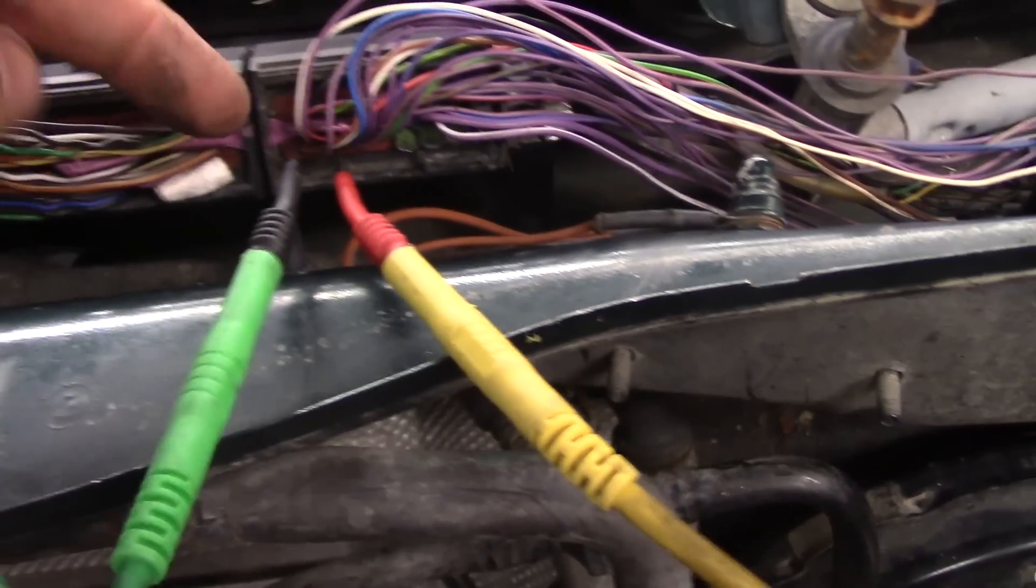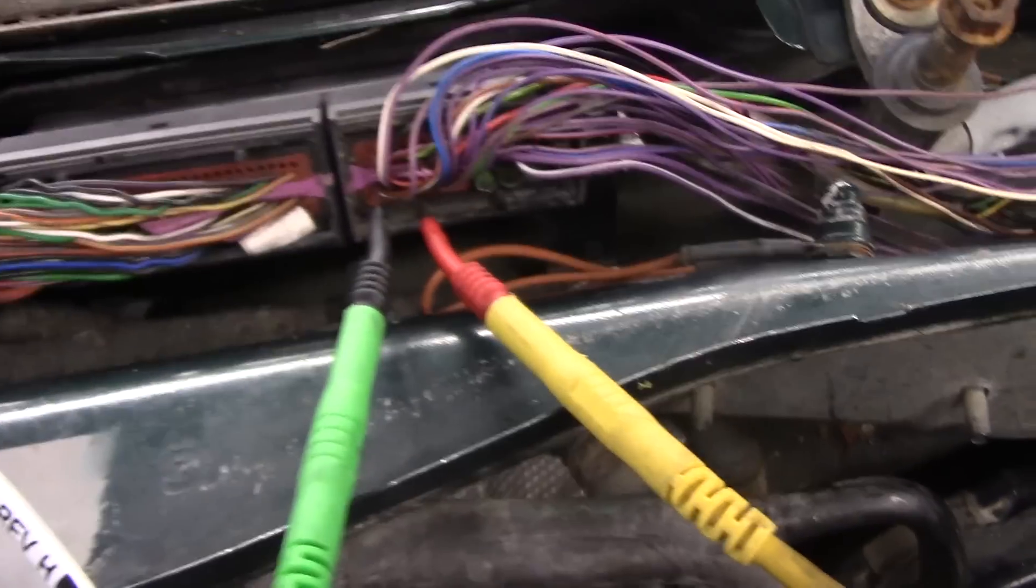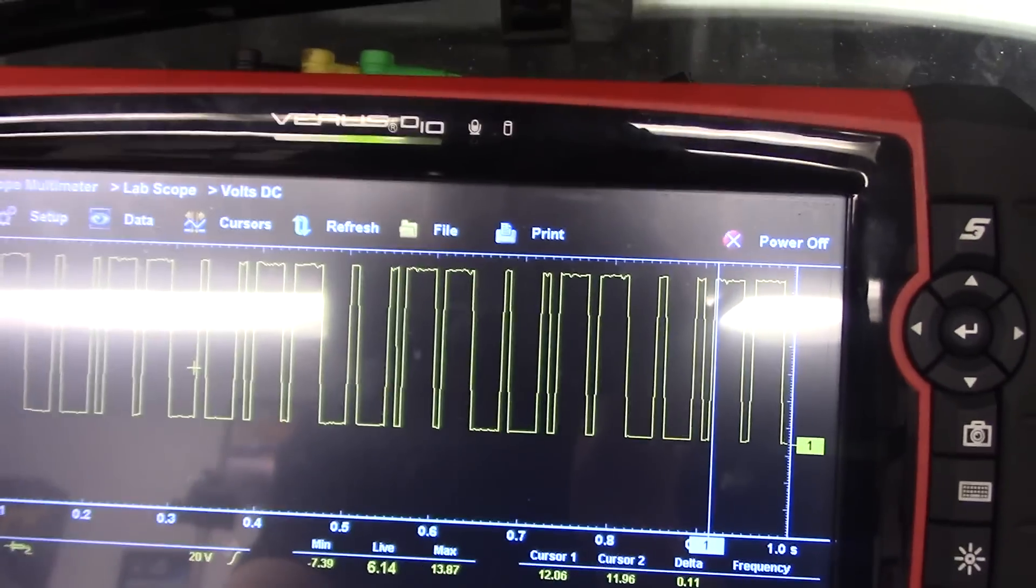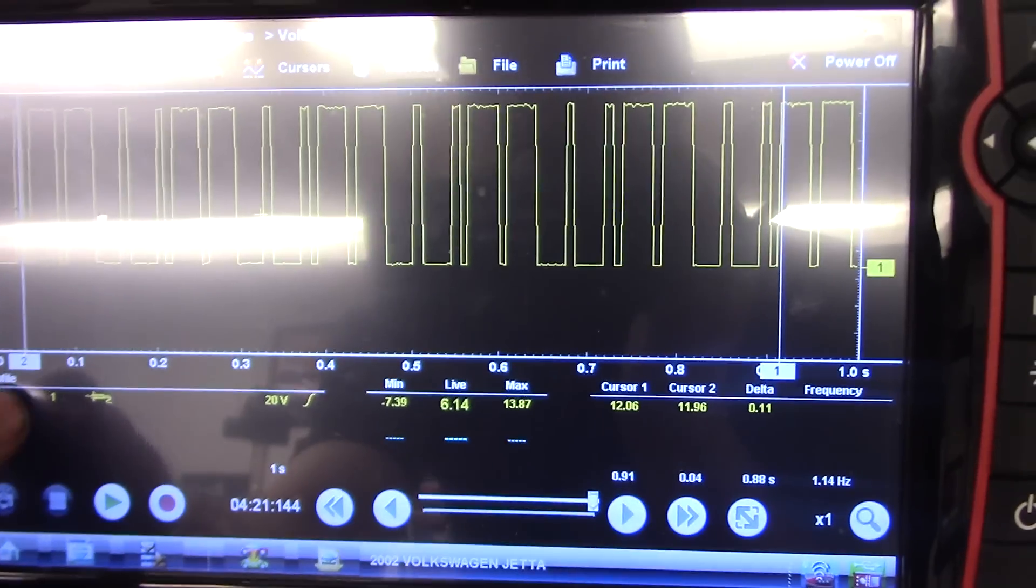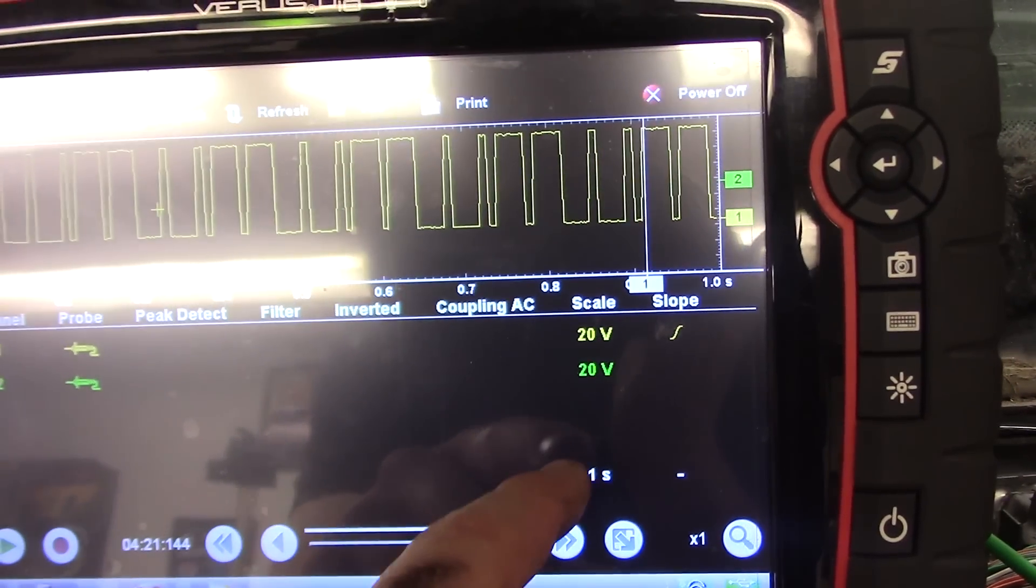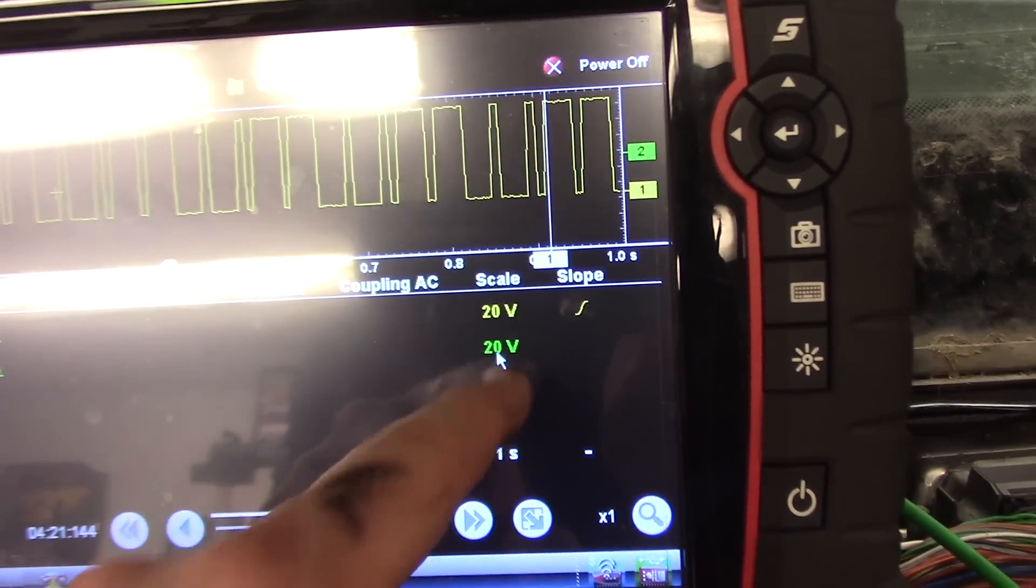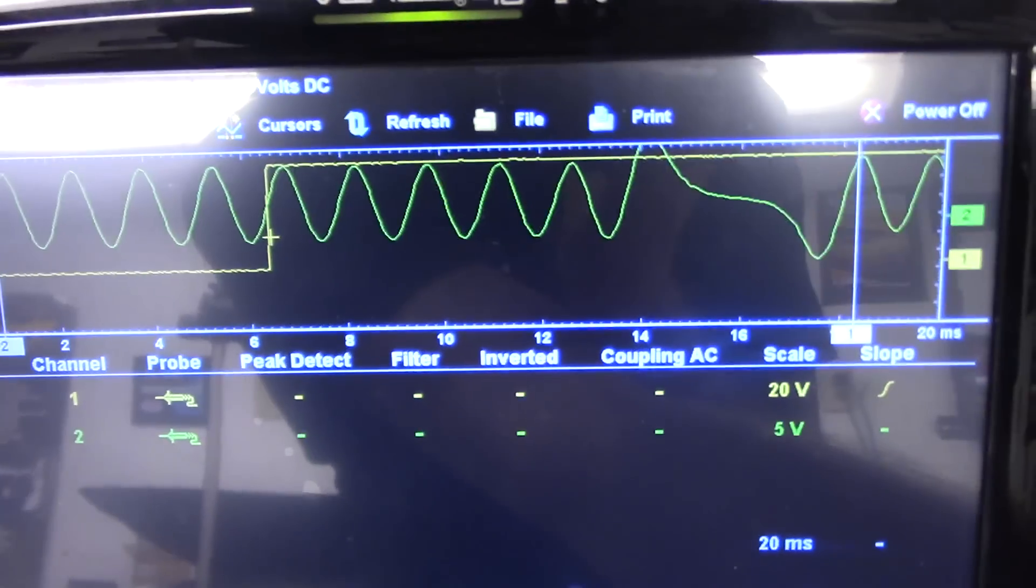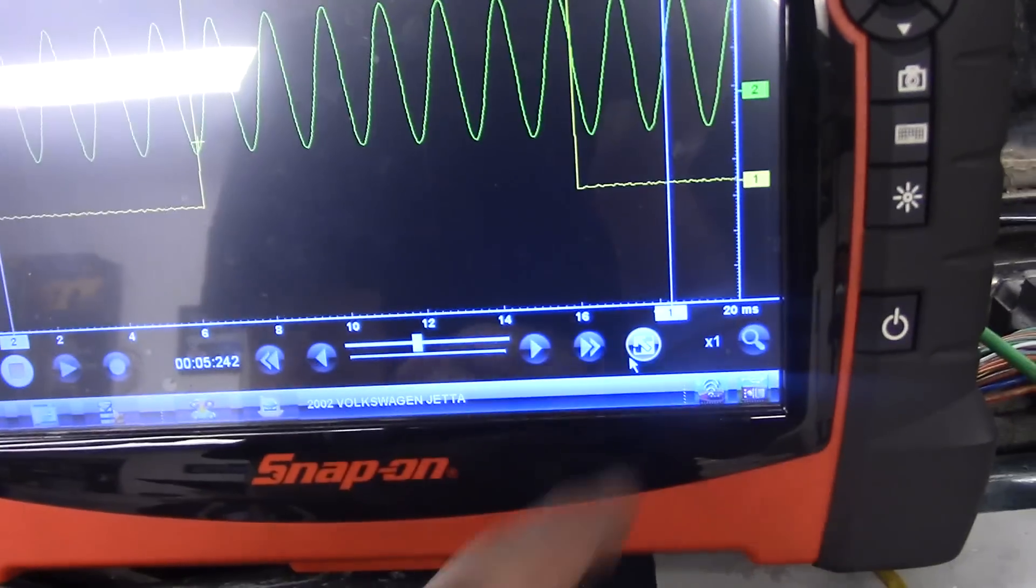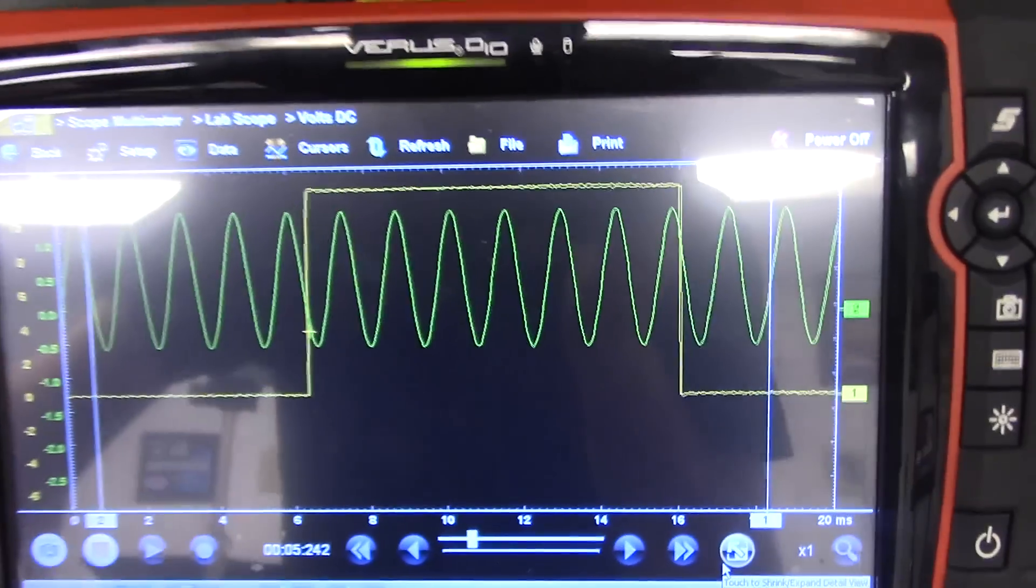So I'm now back probed at the ECM, yellow lead is my cam sensor, I threw the green one in there, that is my crank, and we do have a cam signal at the computer. Let me turn my second channel on. Let's just scale around here. Sorry about the glare. So I do have a cam and crank signal.